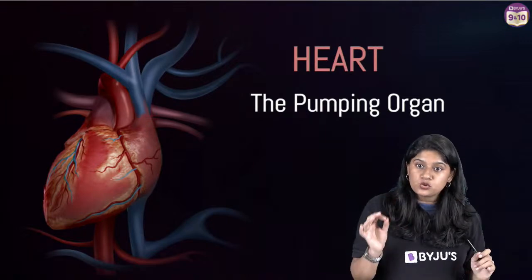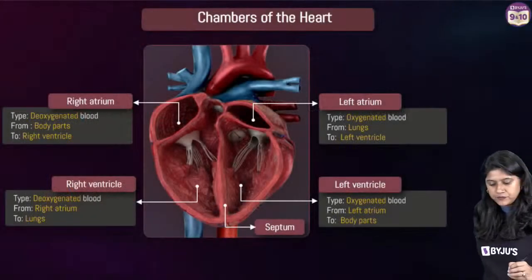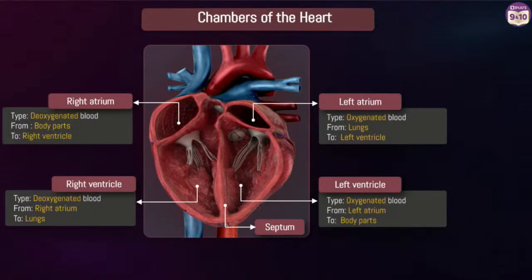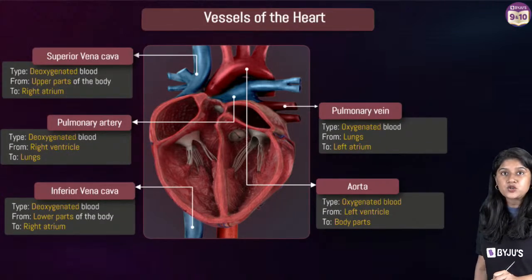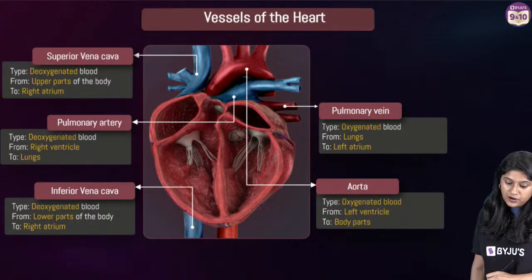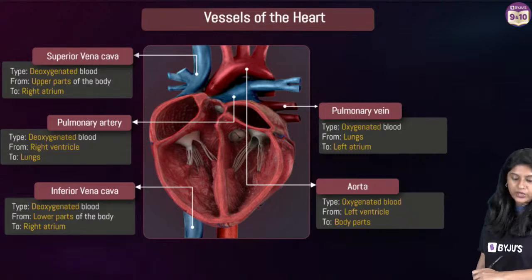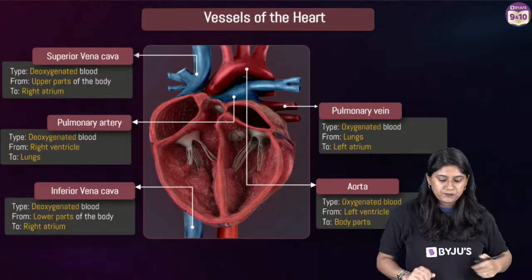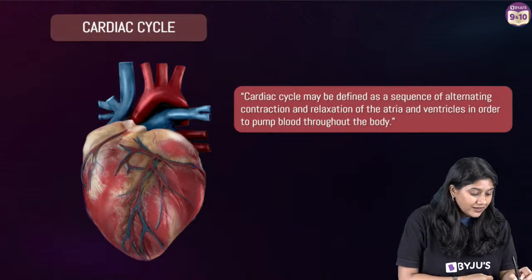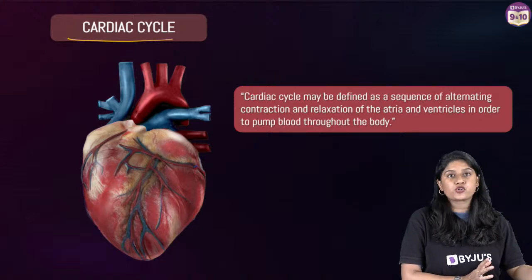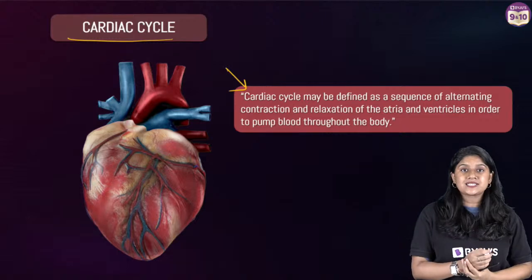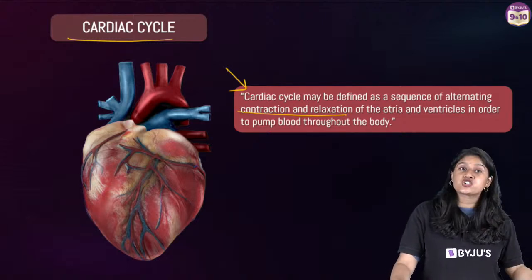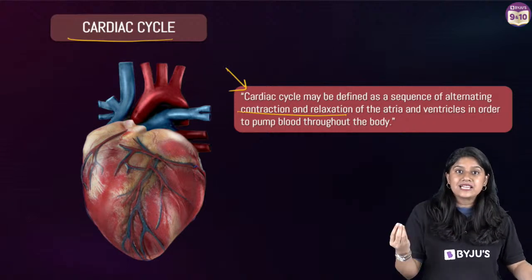I will be showing some important slides — do take a screenshot. We have all the chambers of the heart, the blood vessels, and the valves. Now we are starting with the cardiac cycle. Let's understand what the cardiac cycle is. When there is an alternative contraction and relaxation, we call that the cardiac cycle. When we see the contraction and relaxation of the atrium and the ventricles, we call it the cardiac cycle.